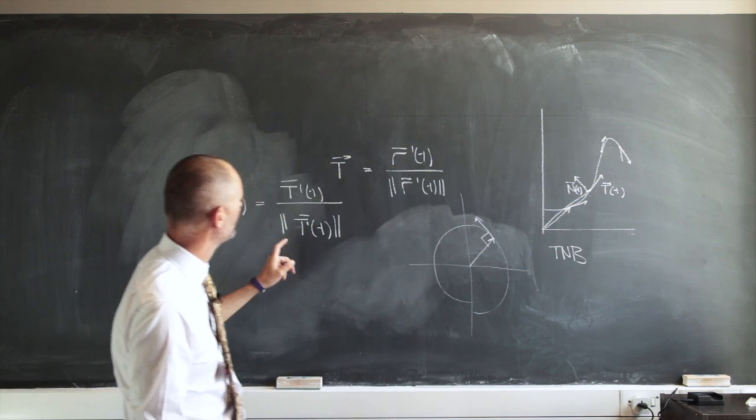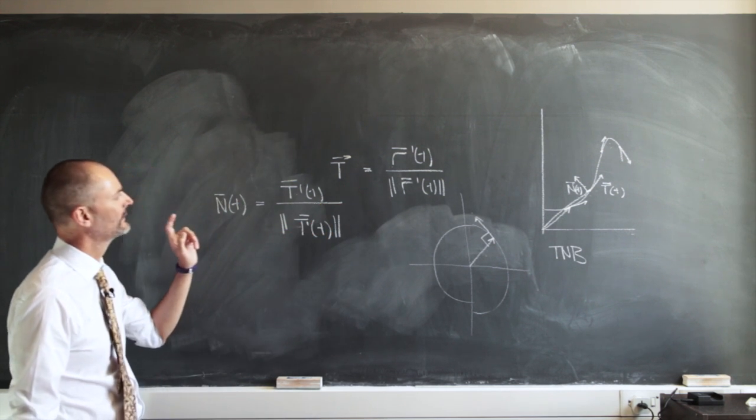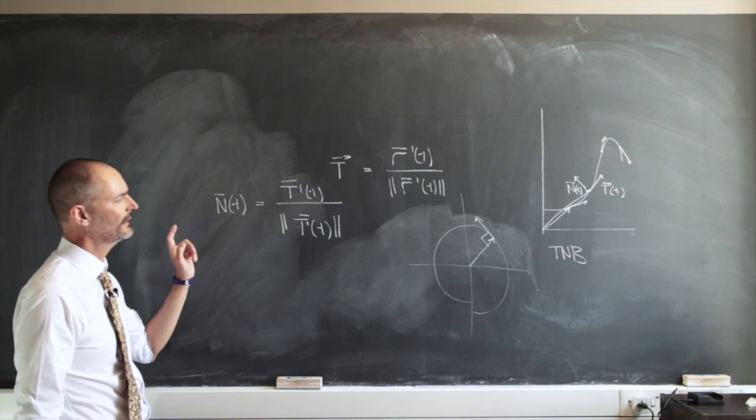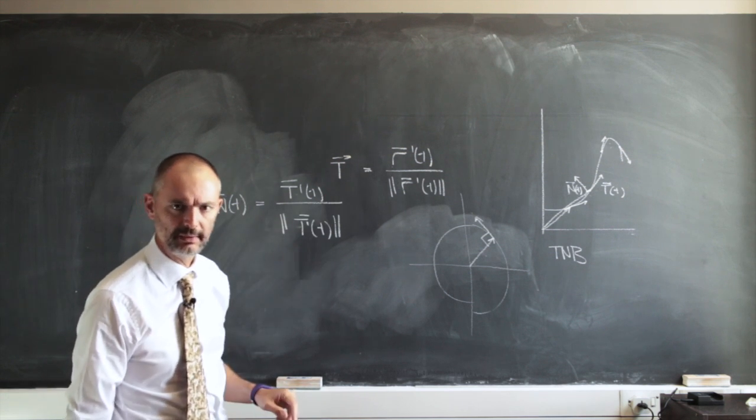And if you were to do this, you can do problems where you can just take the dot product of these two vectors and it's going to end up being zero.